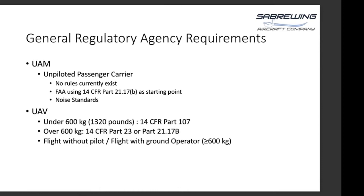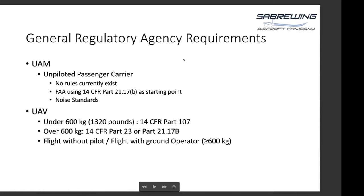Noise standards are part and parcel of the regulatory requirements. The goal is that they can't be more noisy than helicopters — actually they need to be much less noisy. For UAVs, there are two main headings: under 600 kilograms, which in Imperial is 1,320 pounds. Anything under 600 kilograms falls under Part 107.